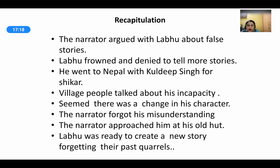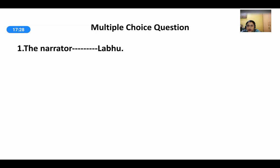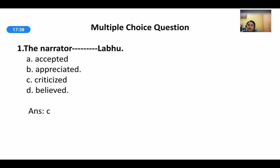MCQ 1: 'The narrator ______ Labu.' Options: accepted, appreciated, criticized, believed. The answer is option C — criticized. The young boy Anand criticized Labu for his false story, particularly the devil ram story — criticized meaning to comment in a negative manner.